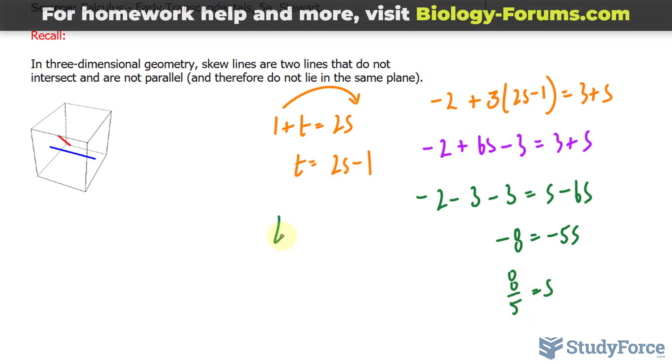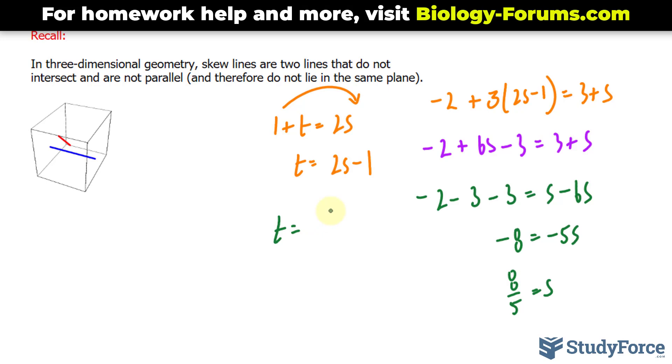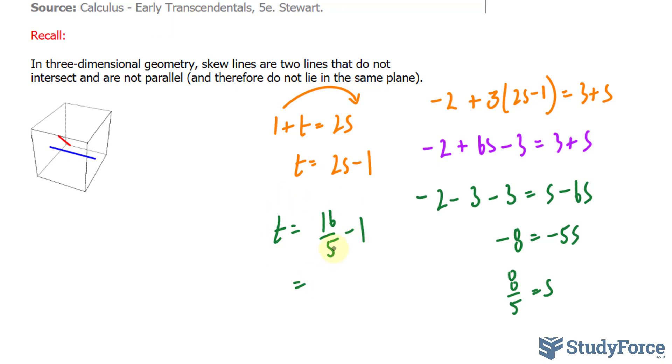I'll substitute this now into here. t is equal to 2 times 8, 16 divided by 5, minus 1. That results in 11 over 5.